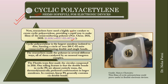You can go to the DOI for details. Essentially, cyclic polyacetylene is the largest annulene isolated to date, forming a circle of over 200 CH units connected by alternating double and single bonds. This Florida team first made the cyclic compound in 2016, and research has continued since. One special feature is that the double bonds in cyclic polyacetylene are almost entirely trans, which is the thermodynamically preferred conformation in most annulenes.